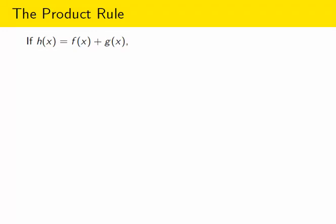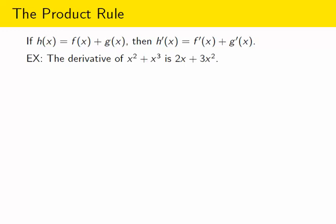If we add two functions together, we can find the derivative of the resulting function by just taking the derivatives of the two functions we started with and adding those together. For example, if you have the two power functions x squared and x cubed and you add them together to make a new function — a polynomial — you can take the derivative of that polynomial by just taking the derivative of x squared and the derivative of x cubed and adding those together. So when you add or subtract functions, there's a really easy way to find the derivative of the more complicated function you've created from those simpler building blocks.